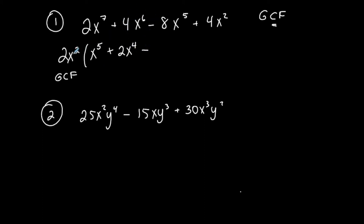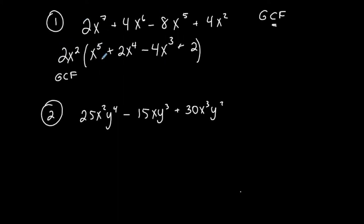Bringing down my minus: 2 times what gives me 8? 2 times 4. I had 5 x's to start with, took 2 out, so I have 3 remaining. Plus, 2 times what gives me 4? 2 times 2. I had 2 x's to start with, took 2 out, so there are none left. If I were to distribute this back through, it gives me the same exact polynomial I started with — therefore this is factored correctly. There's nothing else in common amongst all 4 terms, so I took out the greatest common factor.